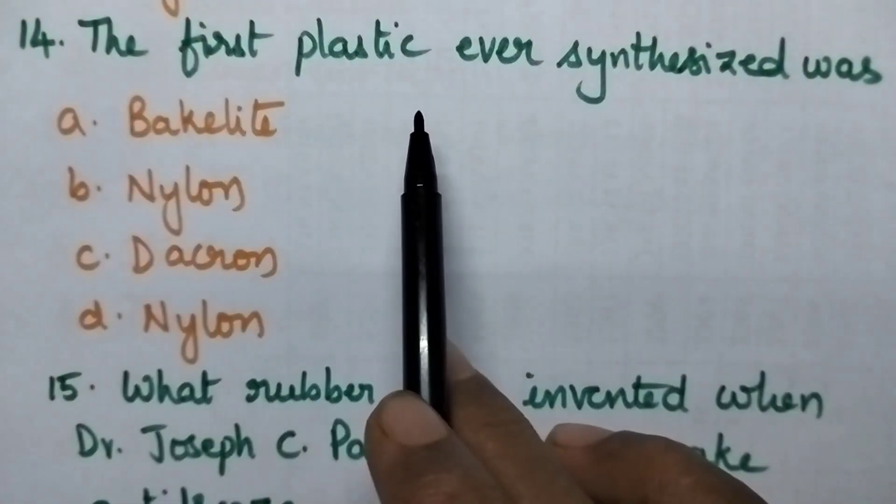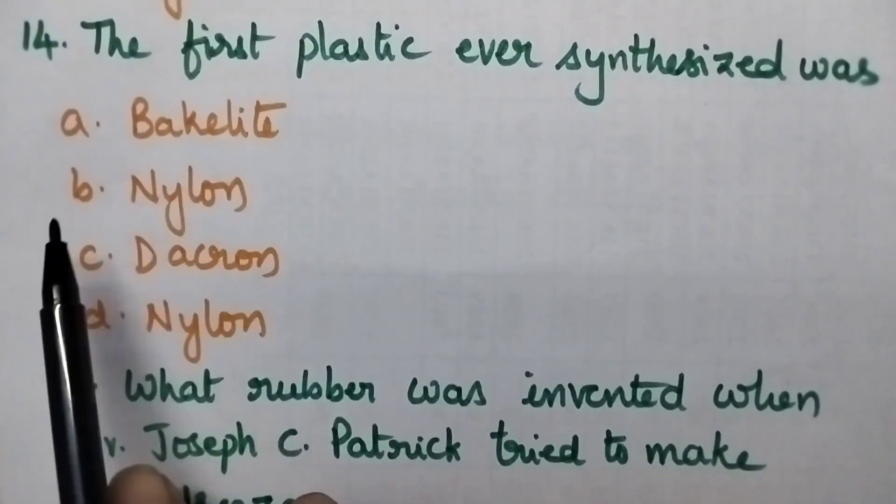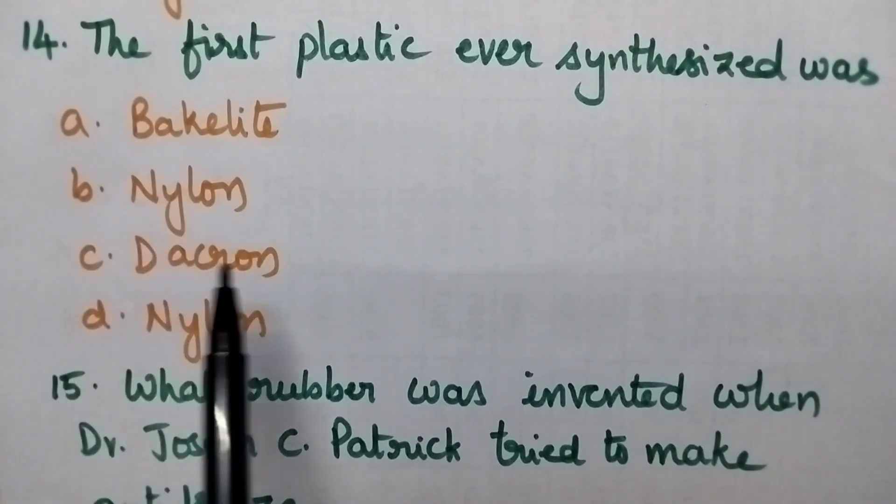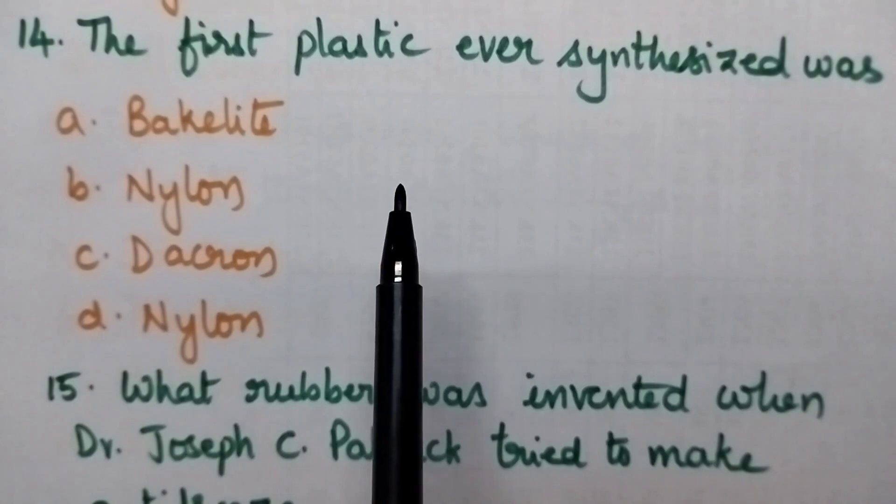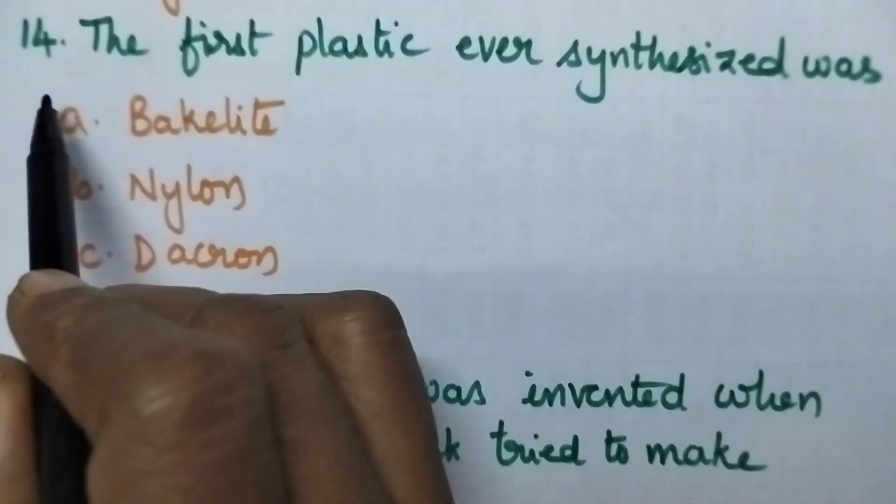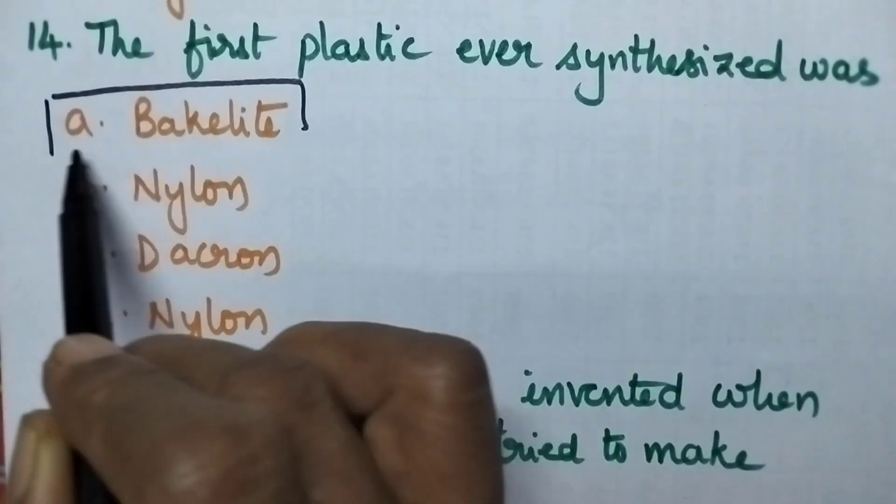The first plastic ever synthesized was A. Bakelite, B. Nylon, C. Dacron and D. Nylon. So first plastic synthesized in the laboratory is Bakelite. So option A is the right answer.